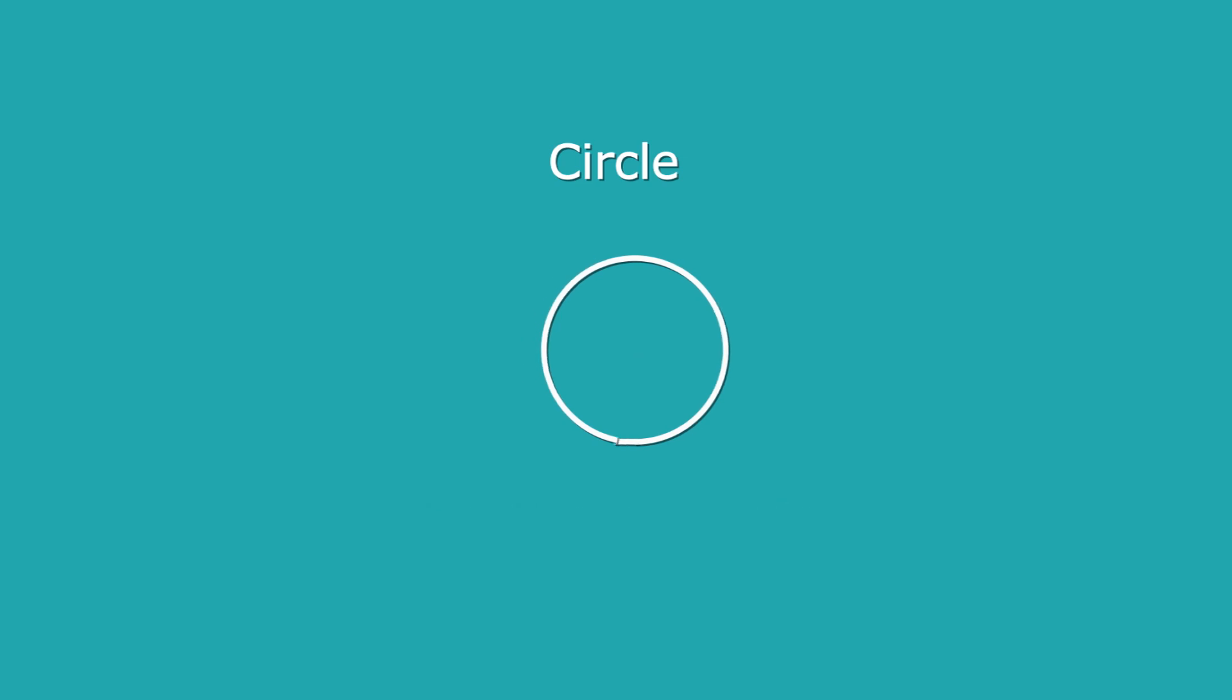Now, if I unwrap the circle, I get what we call the circumference. That's the length around the outside. So, as we remember from our formula for pi, circumference is pi times the diameter.